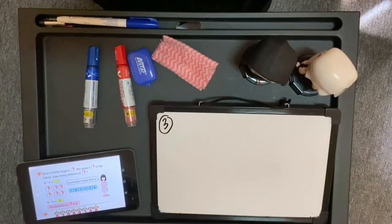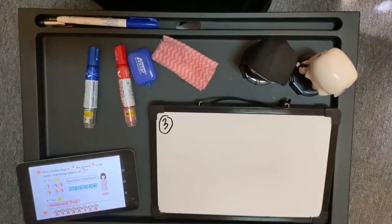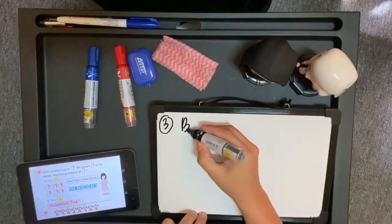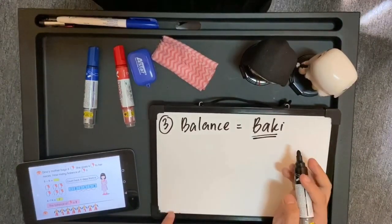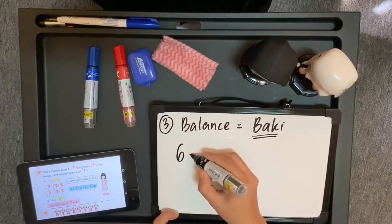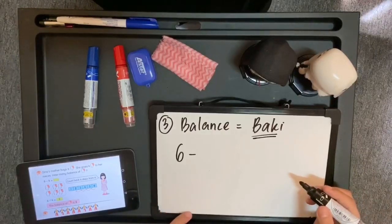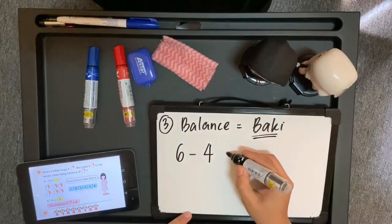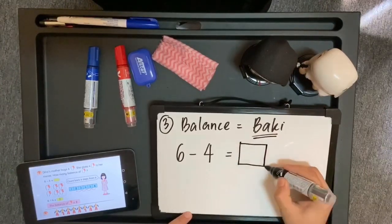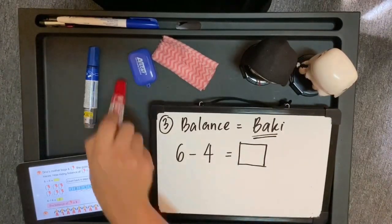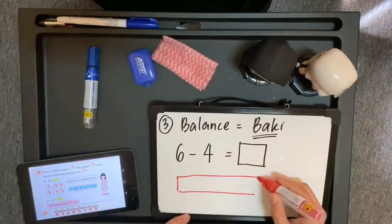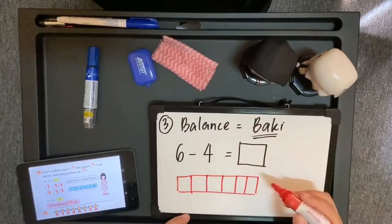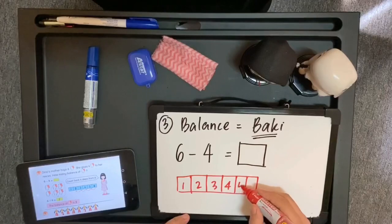Dinas mother buy 6 hairband. She give 4 hairband to her niece. How many balance of hairband? Soalan berkaitan dengan tolak. Kata kunci dia, baki — balance. Beri 6, beri kepada anak saudara dia 4. Berapa yang tinggal? Boleh guna method yang ada dalam buku teks, iaitu count back. 1, 2, 3, 4, 5, 6.